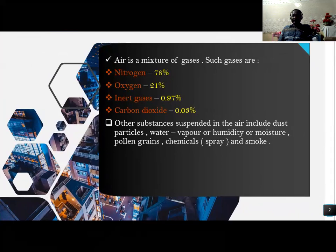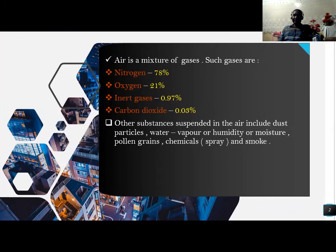What is air? Air is a mixture of gases. Such gases are nitrogen, which represents 78%; oxygen, which is 1%; inert gases, also known as rare gases, 0.97%; and carbon dioxide, 0.03%.